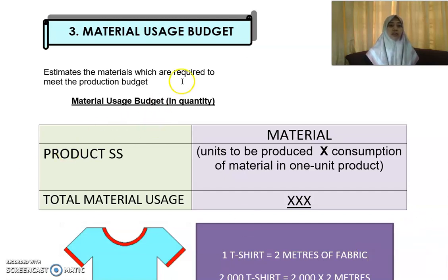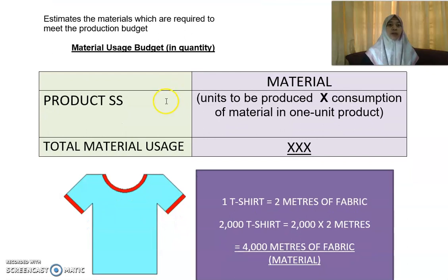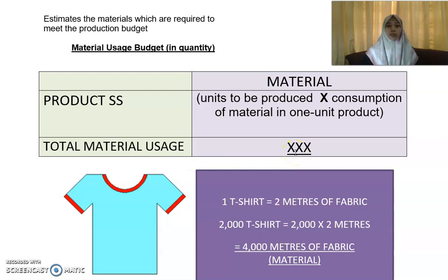The material usage budget estimates the materials which are required to meet the production budget. How do you calculate the material usage budget in quantity? For example, you have product SS. The units of material required will be the units to be produced times the consumption of material in one unit of your product. That will be your total material usage budget.